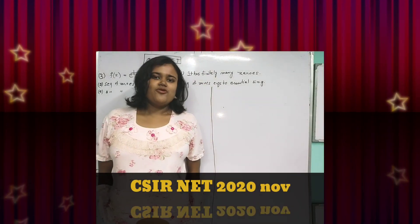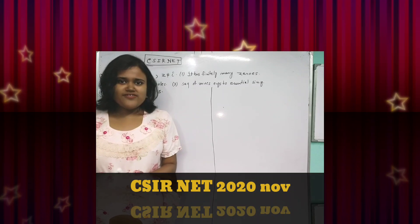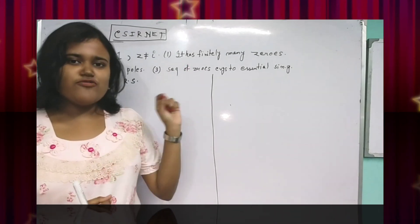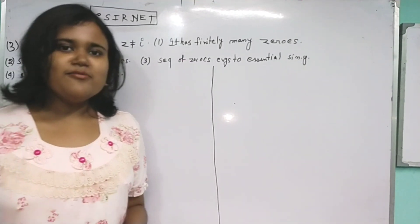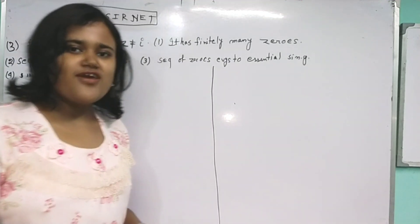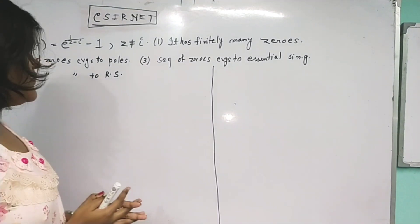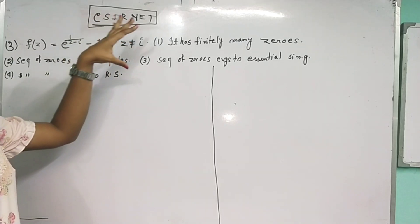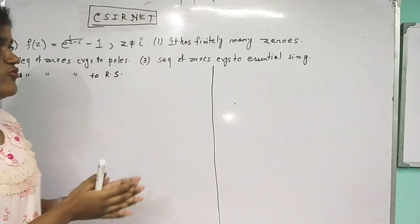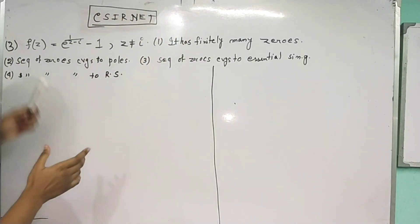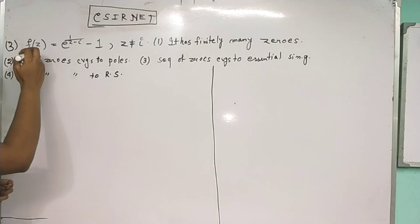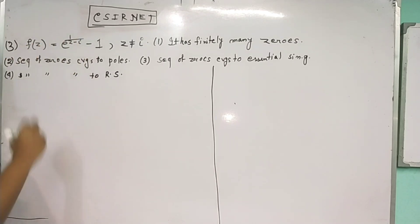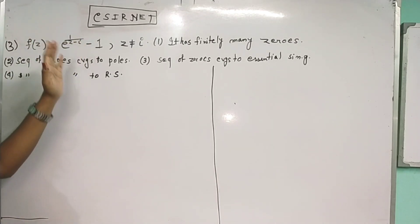Hey friends, today I will discuss the CSIR NET solution of December 2020, Part C. A very interesting question came: the function f(z) = e^(1/(z-i)) - 1.